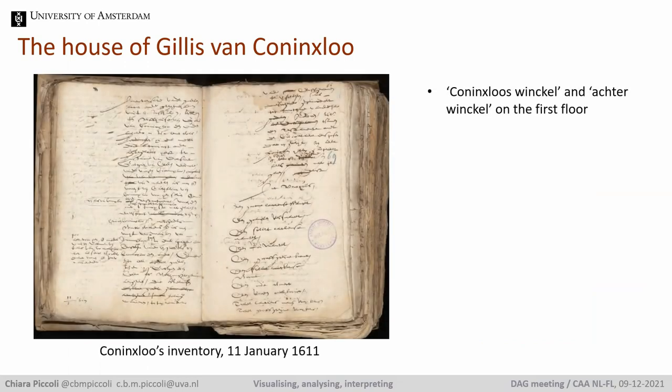In this project, one of the most important sources we are working with are probate inventories. These documents were drawn up when a person died, for example in case of bankruptcy, to record the objects and furniture in their house. This is as close as we can get to having an idea about what people had in their homes and where they kept them. Luckily, Koningslohe's inventory is organized room by room, which is not always the case — many times you find just a list of objects without any information about where to place them.